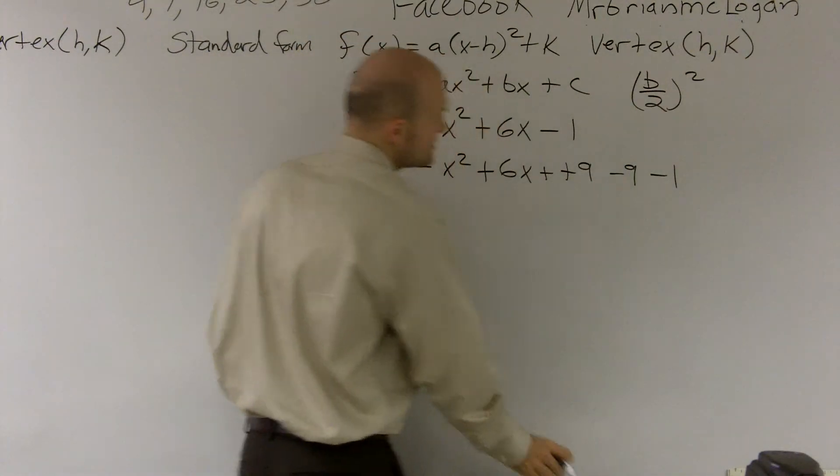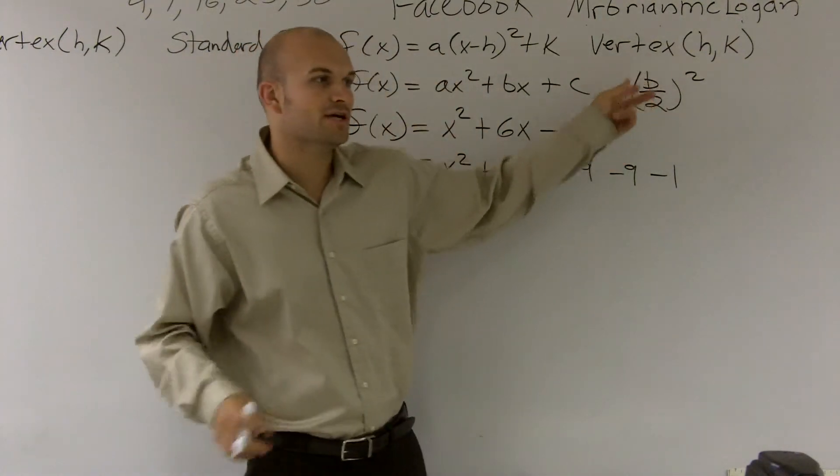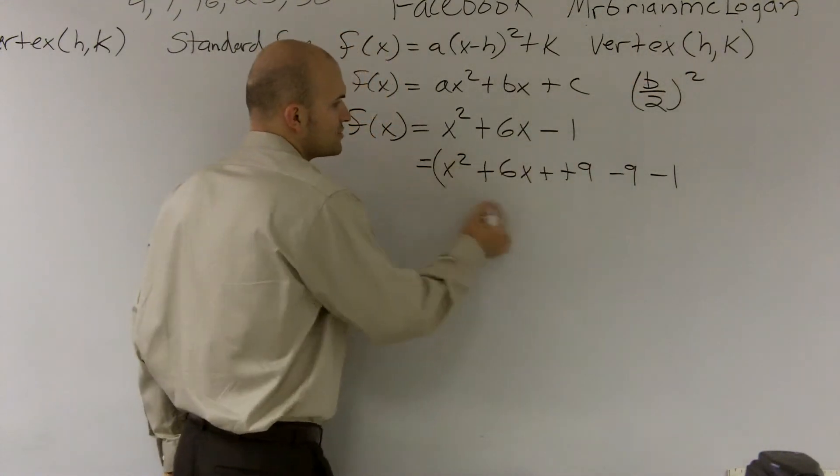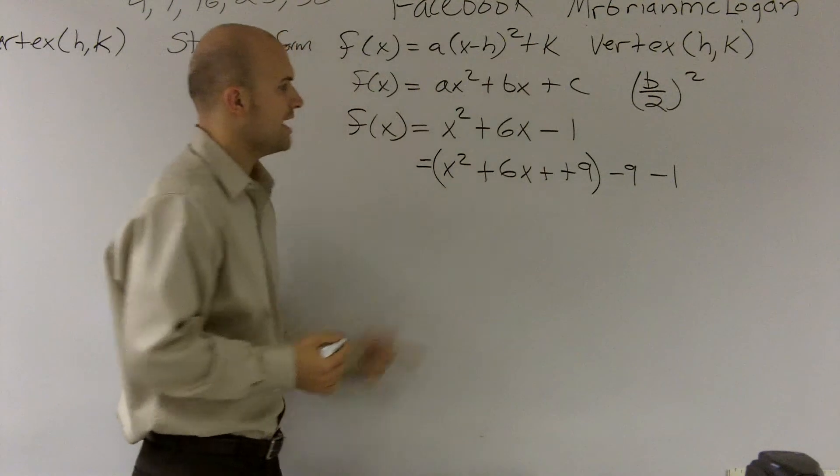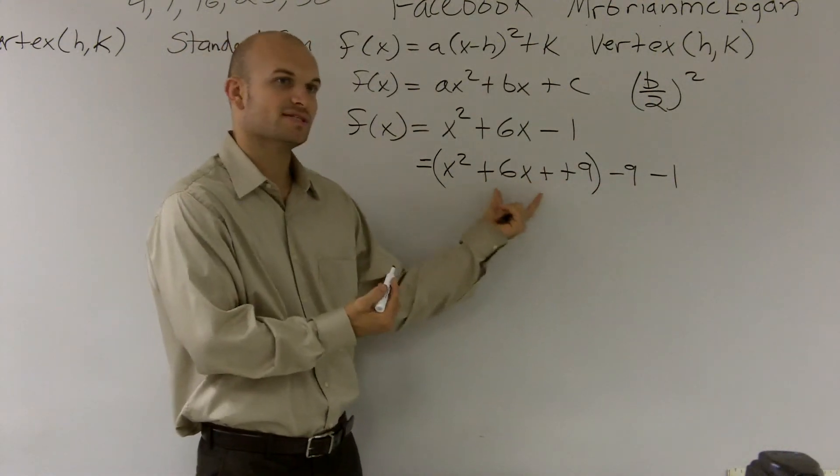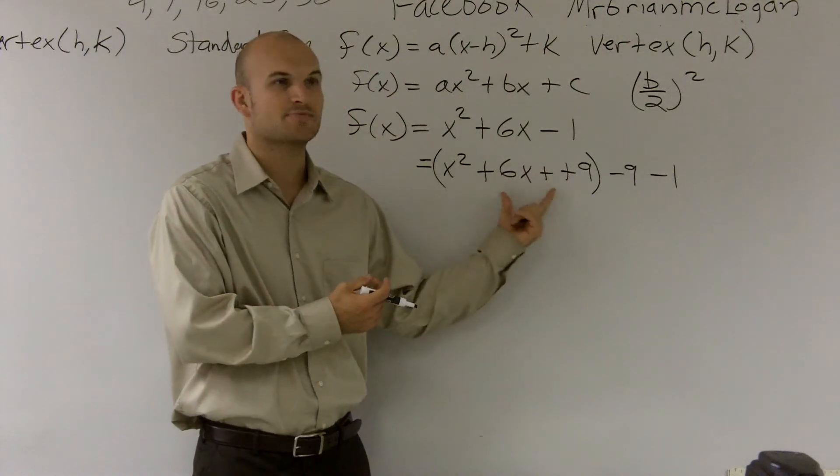Well, the important thing, the reason why we did this is because what this b over 2 squared gives us is it helps us give us a perfect square with this trinomial. So now if I can actually put brackets around this, I can say, hey, this is a perfect square. This is x plus 3 times x plus 3, right?